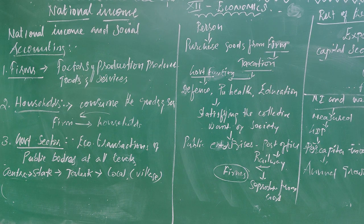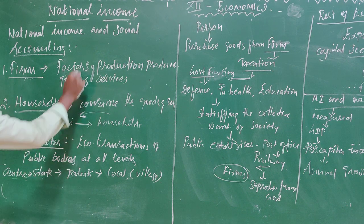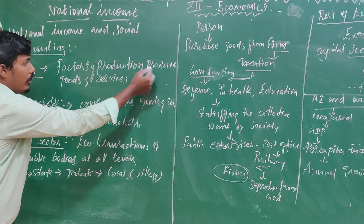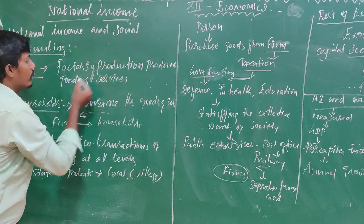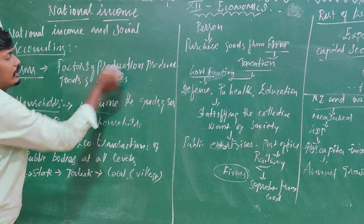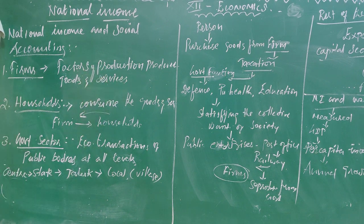For firms, a factor of production produces goods and services for consumers.